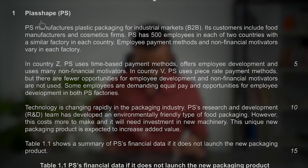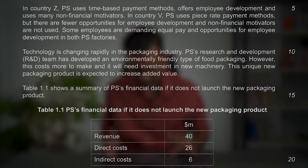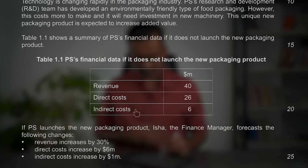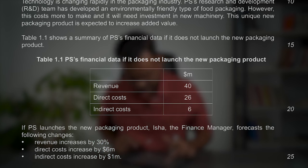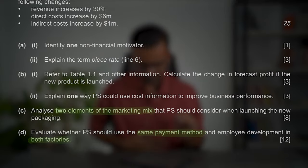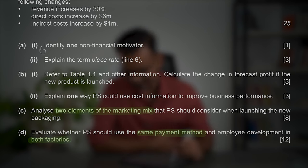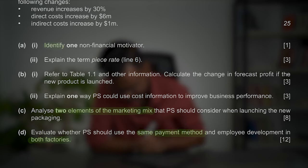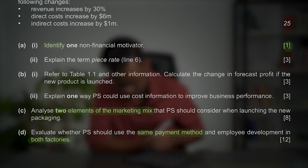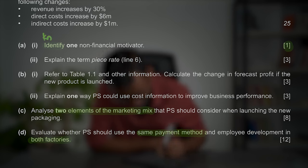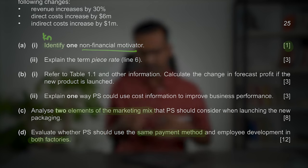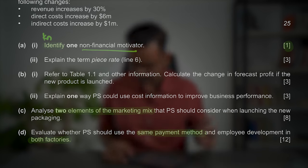You'll start with the business name and some background information. Since Paper 2 tests calculations, you'll also get data in the form of a table, pie chart, or graph to answer part B. The only change since 2022 in part A is that A1 used to be a two-mark 'define' question — it's now a one-mark 'identify' question. One or two words or a phrase is enough; don't waste time on it and move on.